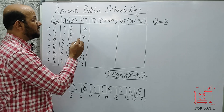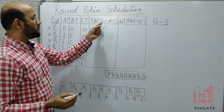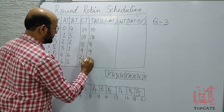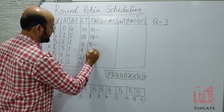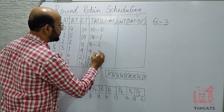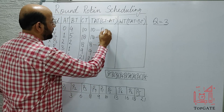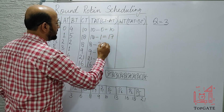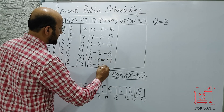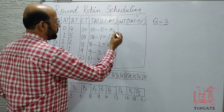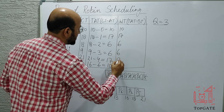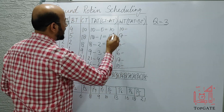Now we'll find the turnaround time. Turnaround time = completion time minus arrival time. Arrival times are 0, 1, 2, 3, 4, 6. So the turnaround times are: P1 = 10−0 = 10, P2 = 18−1 = 17, P3 = 8−2 = 6, P4 = 9−3 = 6, P5 = 21−4 = 17, P6 = 16−6 = 10.